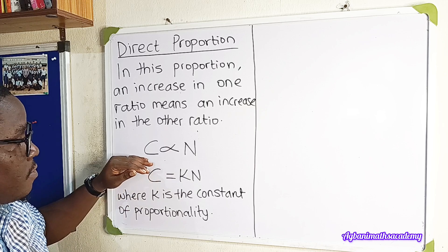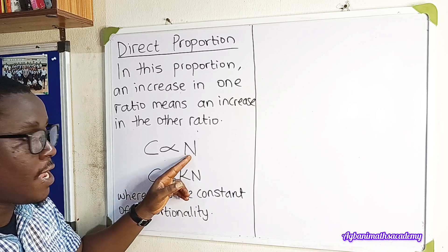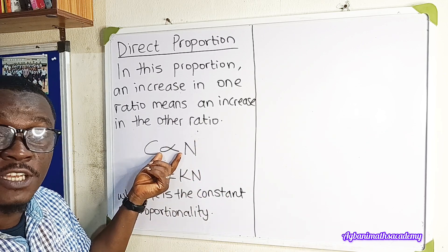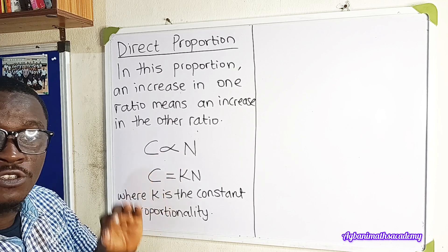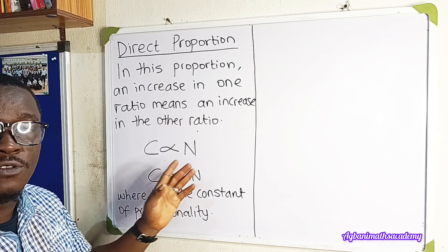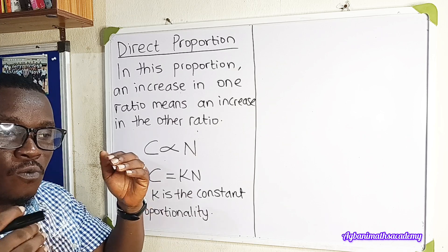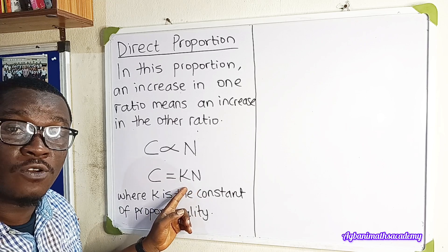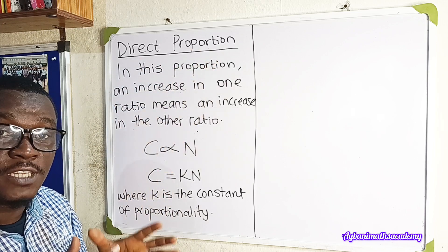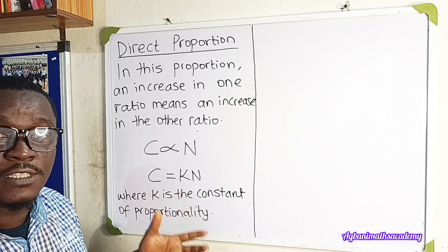Let's look at the situation where C is directly proportional to N. As C increases, N is also going to increase. But to use this relationship to predict future occurrences, we need to change the proportionality sign to an equal-to sign. Once we do that, we introduce a constant K — the constant of proportionality. K is what relates the two values. Without K, you cannot have a proportional relationship. K helps you predict the value of N when C changes.